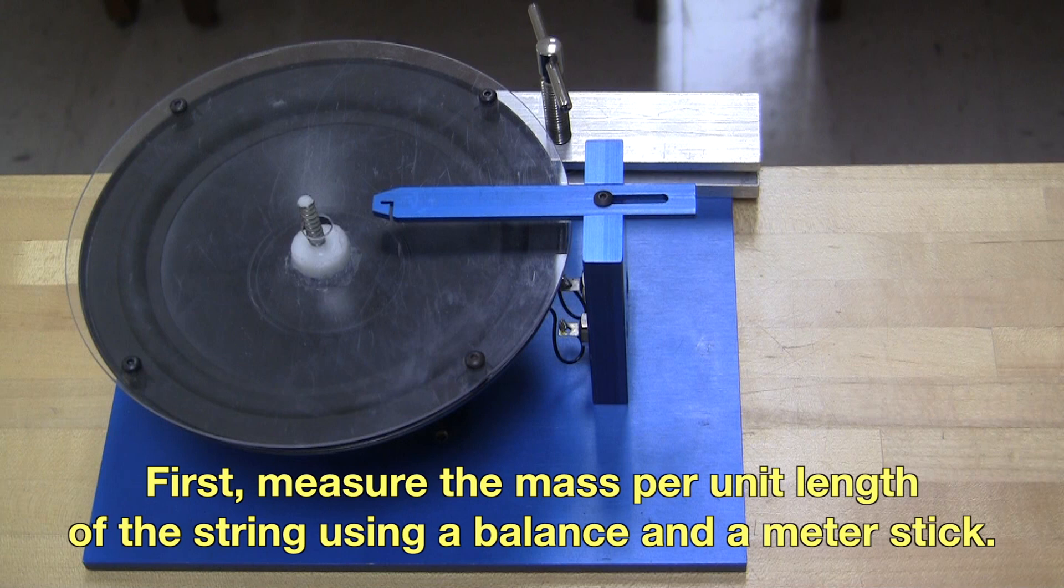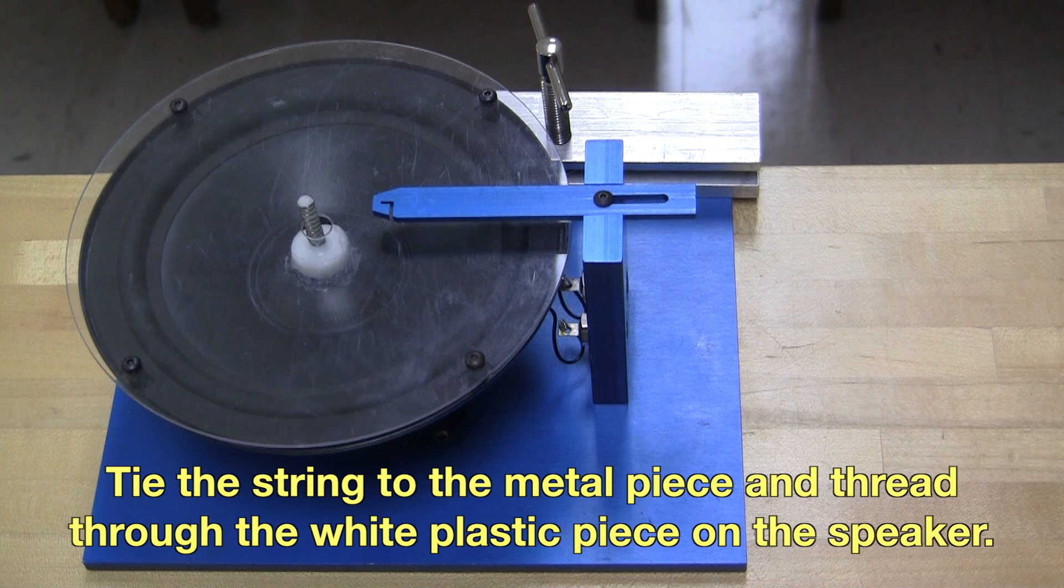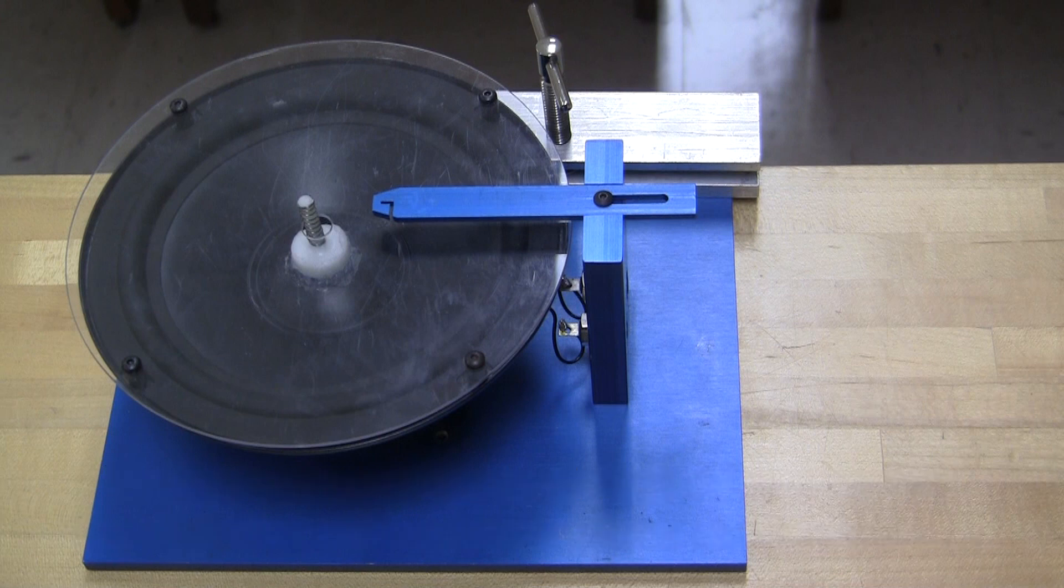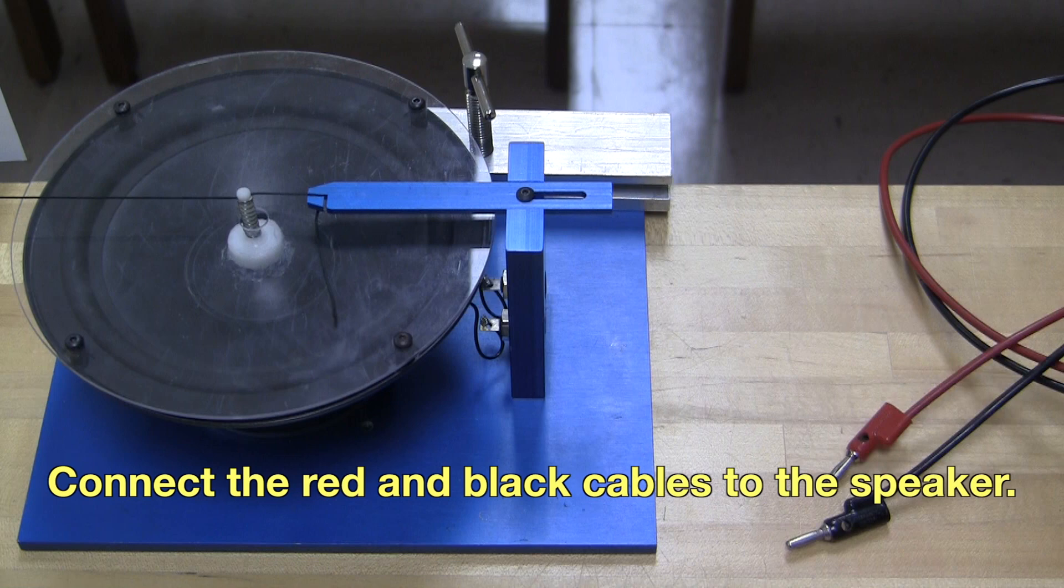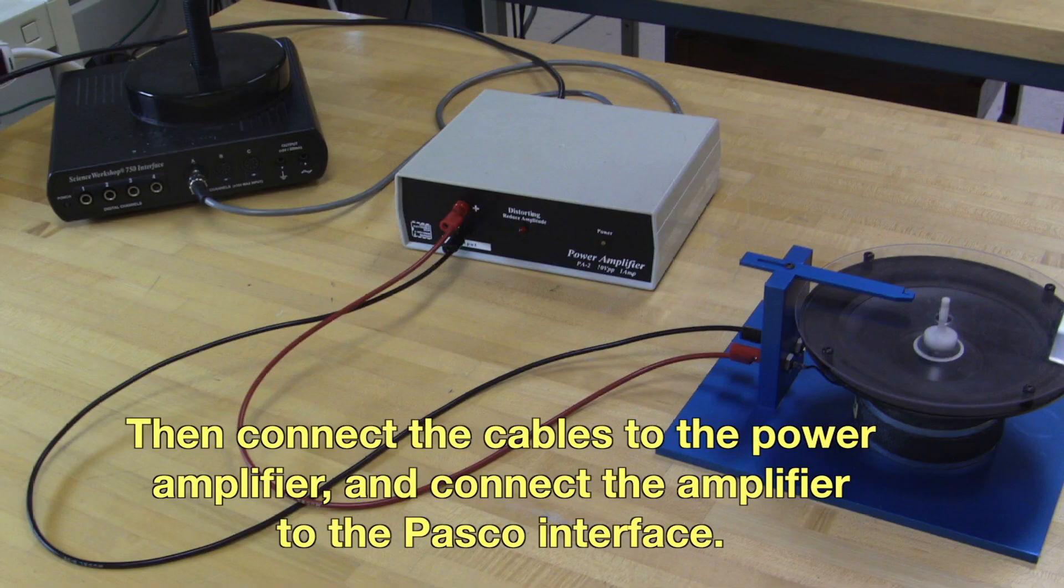To start the experiment, first measure the mass per unit length of the string using a triple beam balance and a meter stick. Tie the string to the blue metal piece on the speaker and thread it through the white plastic piece in the center. Connect the red and black cables to the speaker, then connect these cables to the power amplifier and connect the amplifier to the PASCO interface.